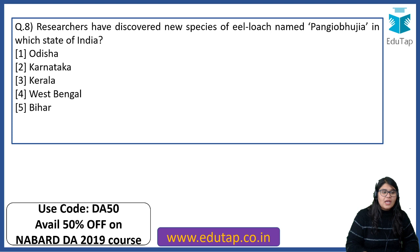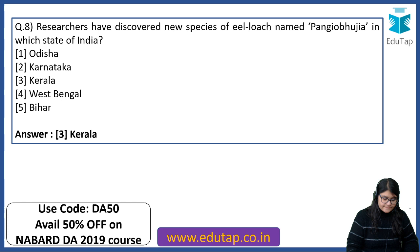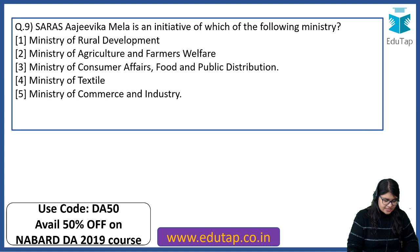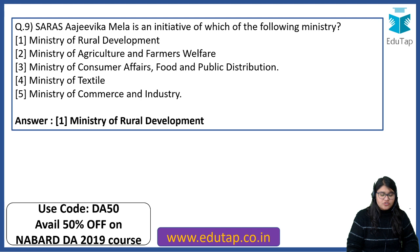Researchers have discovered a new species of eel loach named Pangyo-Bhojiya in which state of India? This is a freshwater fish belonging to the category of loach. The answer is Kerala. Next: Saras Ajivika Mela is an initiative of which ministry? The answer is the Ministry of Rural Development.